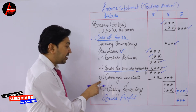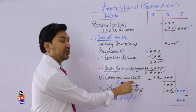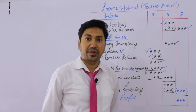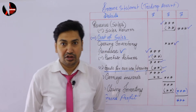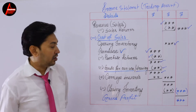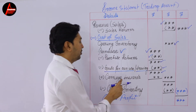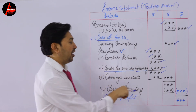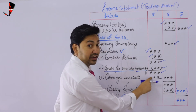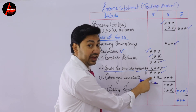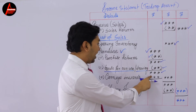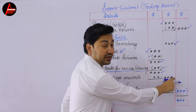Then we add carriage inwards. This item will be given in the trial balance, so if you have it, just take it out and put it here and add it. Notice I did not put a bracket — that means we add this value. So add this and write the answer in the outer column.